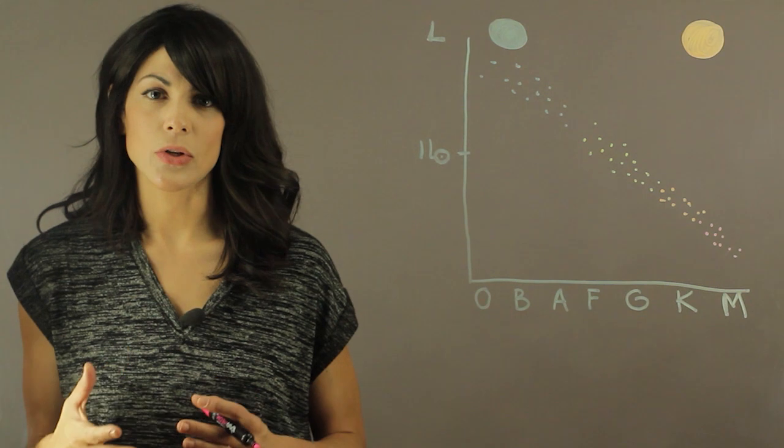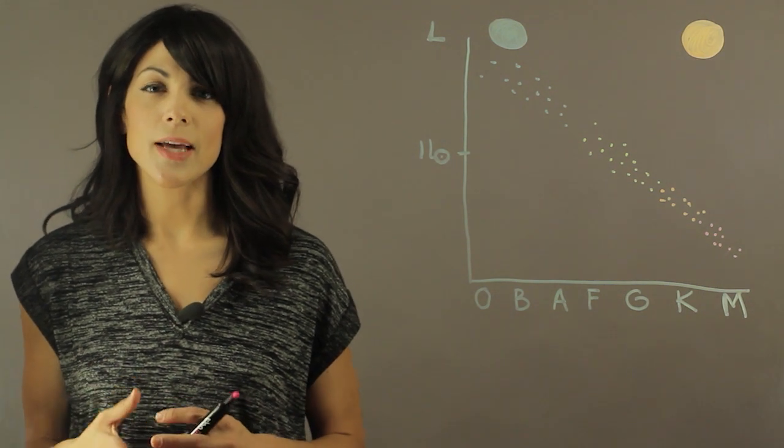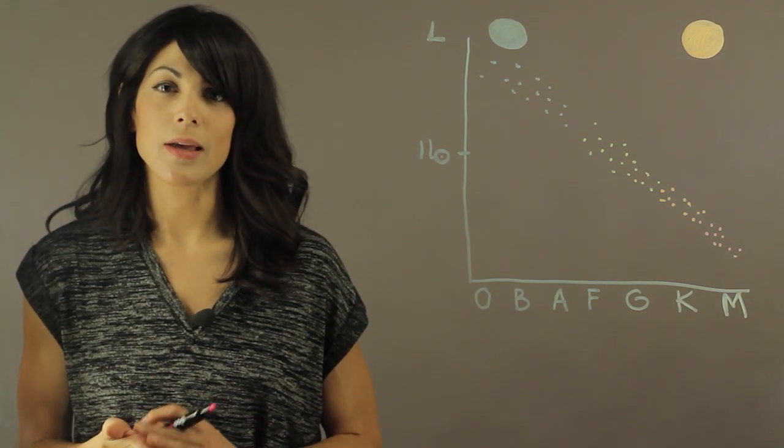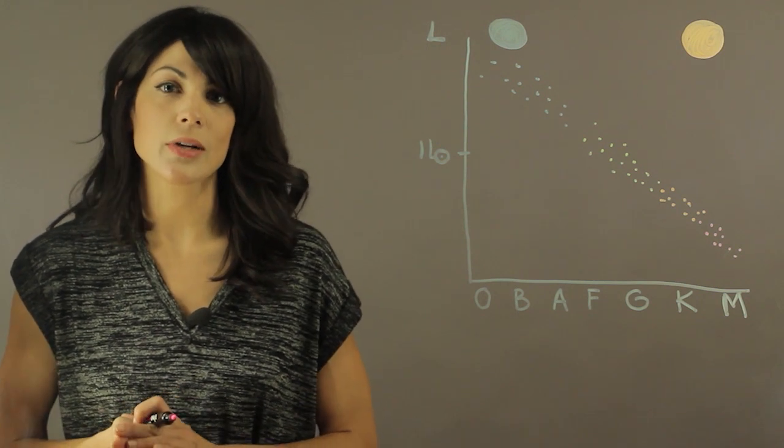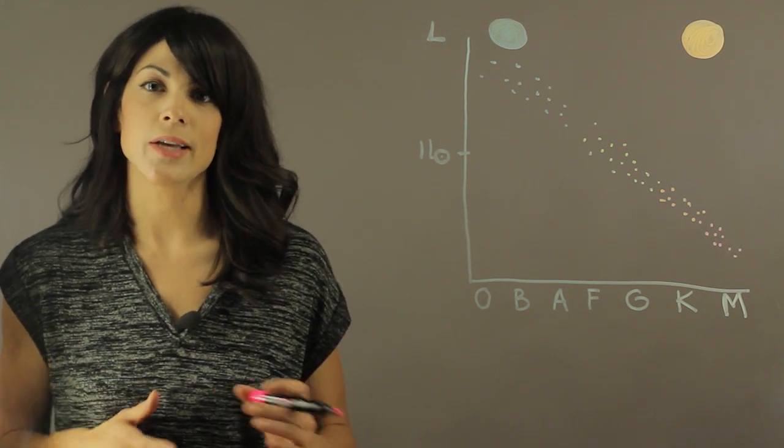The best way to see this is to learn how to use the HR diagram. The HR diagram is really, really important in astronomy and it really becomes how you do all the stellar comparisons, all your stellar calculations, you always turn to your HR diagram.